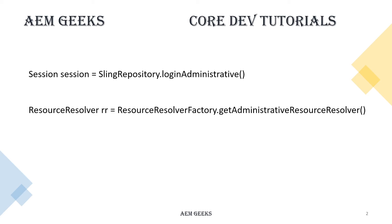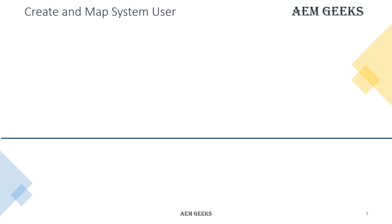At that time there were two operations to get a resource resolver or session: using the repository you could get an administrative session or administrative resource resolver. These gave administrative permissions — meaning full repository access — which broke the principle of least privilege. You could update the whole repository because you had all permissions. To resolve this, AEM introduced the concept of system users and service users in version 6.1.